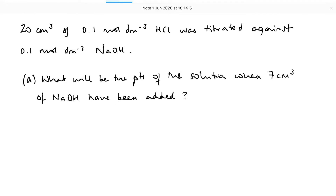In this video, I'm going to show you how to calculate the pH of a solution during a titration at two points. So straightforward titration — strong acid, strong base — hydrochloric acid against sodium hydroxide. I know that the hydrogen ions and hydroxide ions are going to react in a one-to-one molar ratio.